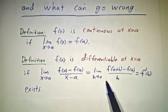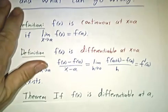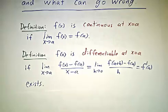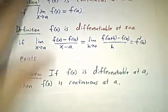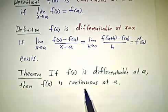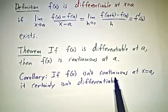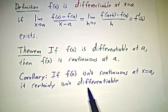But the limit doesn't always exist. We saw that the function absolute value was not differentiable at x equals 0. So what do these two things have to do with each other? Well, the theorem is that if it's differentiable, it's automatically continuous, which means that if it isn't continuous, don't even think about it being differentiable.